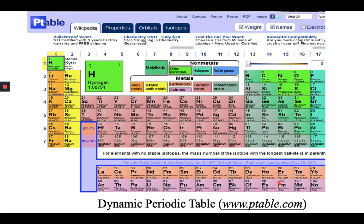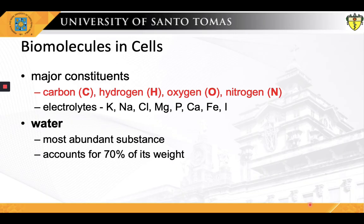As an aside, one very useful tool for studying the different elements, their structure and properties as a function of their atomic number, is the dynamic periodic table found at www.ptable.com. Feel free to browse and interact with this dynamic table at your most convenient time. All living cells are composed of a set of elements — the major constituents of most biomolecules are carbon, oxygen, hydrogen, and nitrogen.